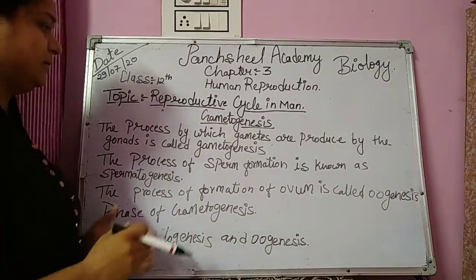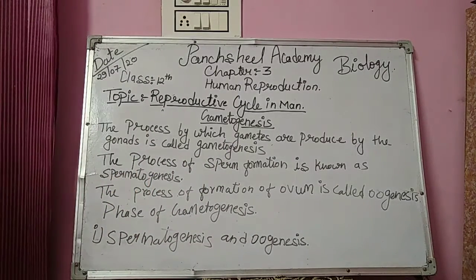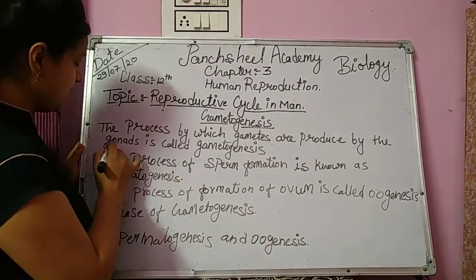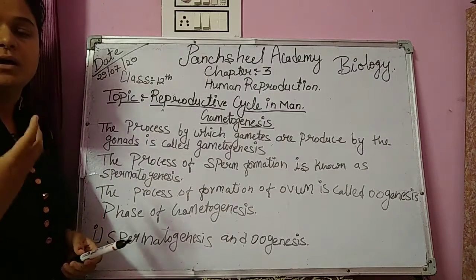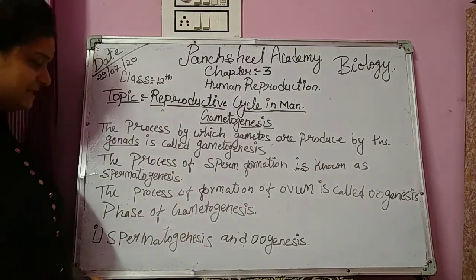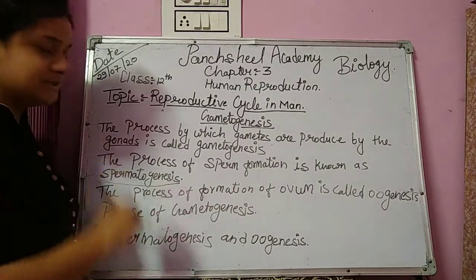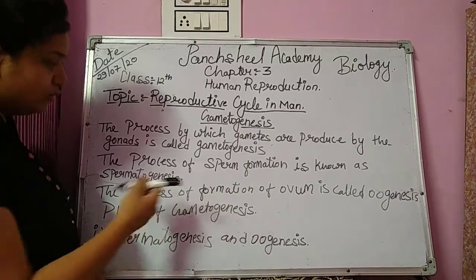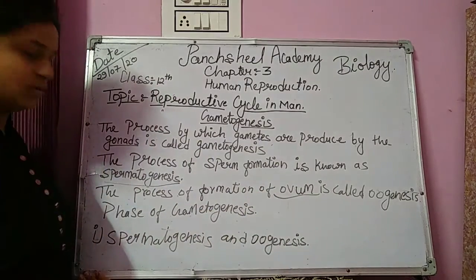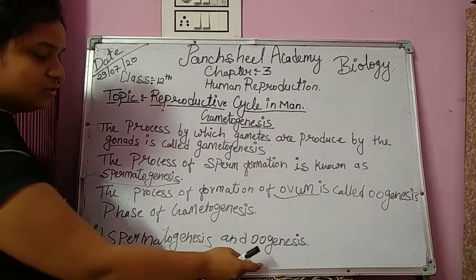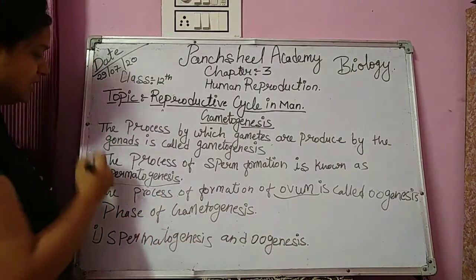Now we are discussing gametogenesis. The process by which gametes are produced by the gonads is called gametogenesis. The process of sperm formation is called spermatogenesis, and the process of formation of ovum is called oogenesis. Generally, gametogenesis is divided into two phases: spermatogenesis and oogenesis.